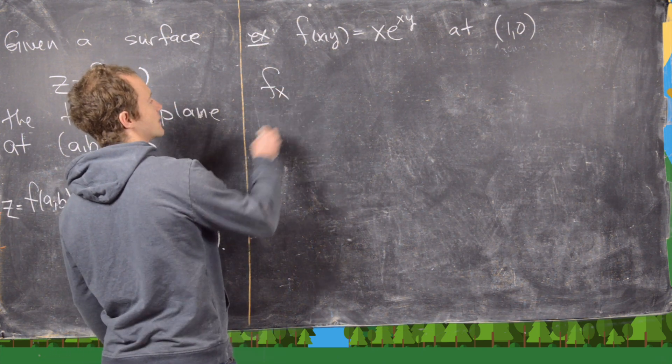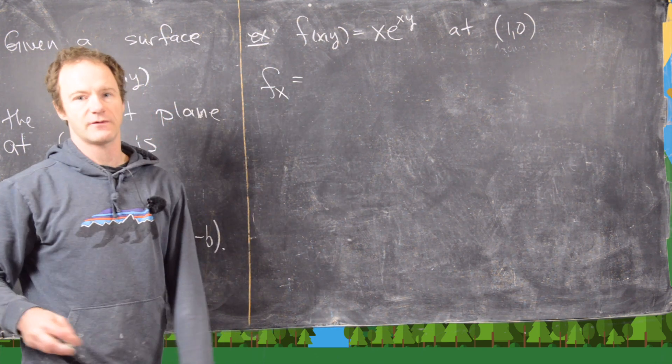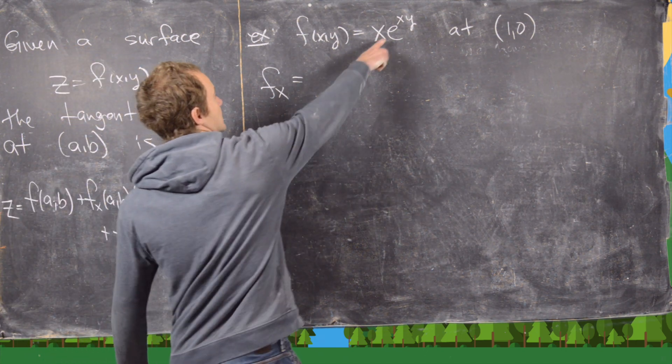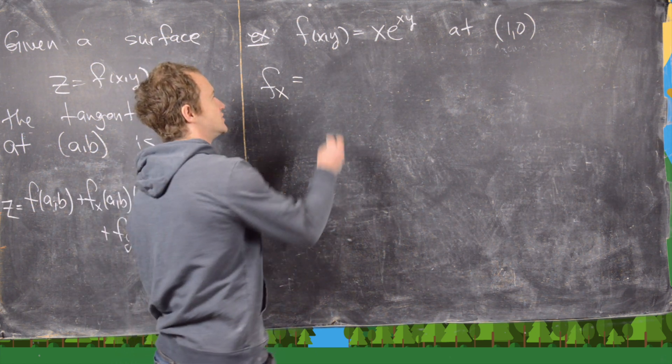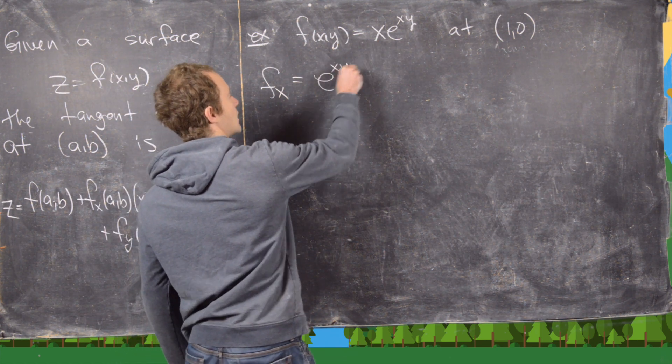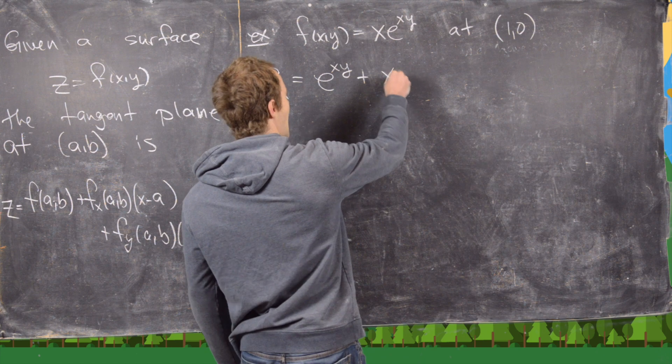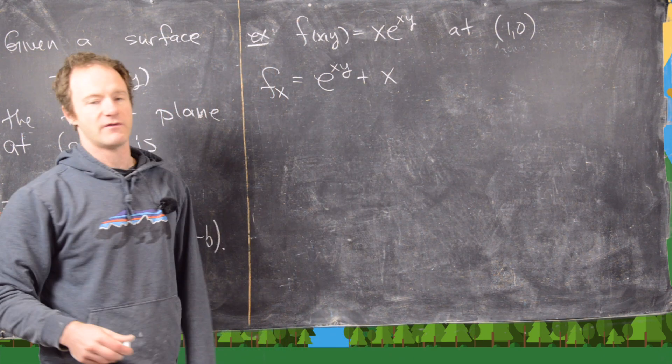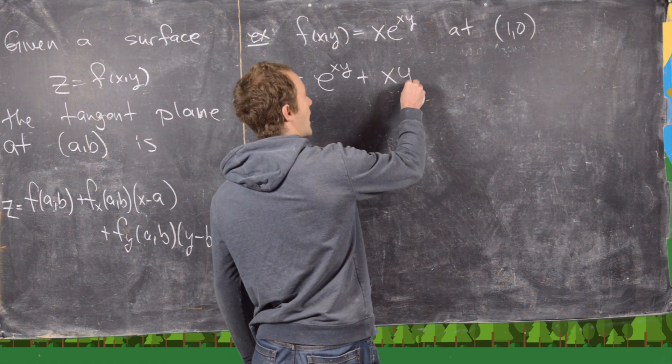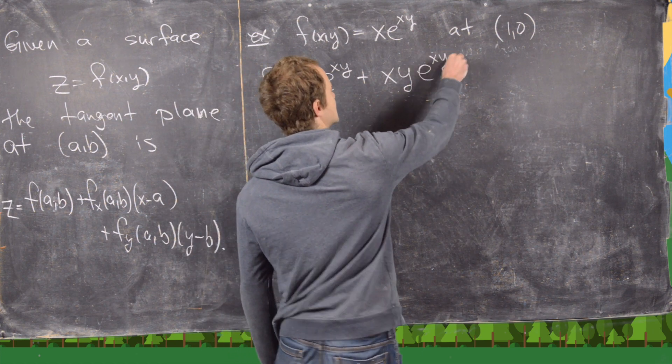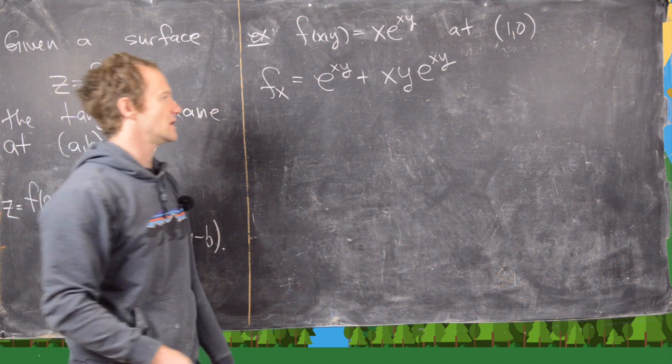We need these two partial derivatives. The partial derivative with respect to x, notice here we need to use the product rule. The derivative of x is just 1, so we have e to the xy plus x times the derivative of e to the xy with respect to x. By the chain rule the y comes down and we get e to the xy again.